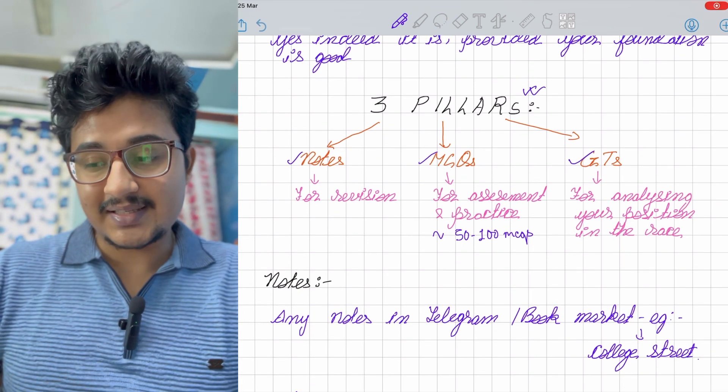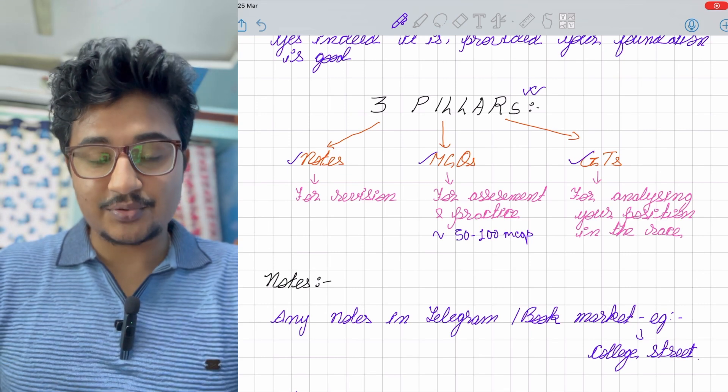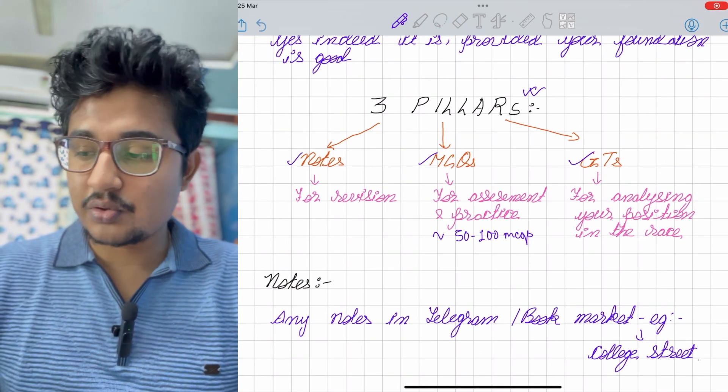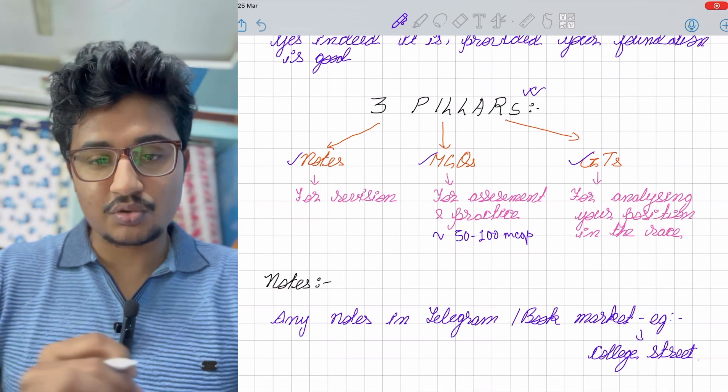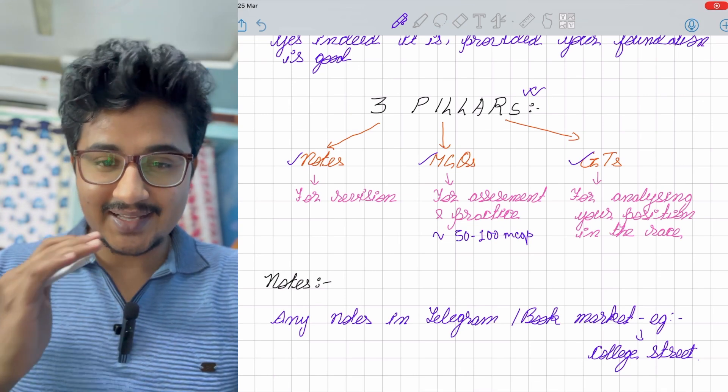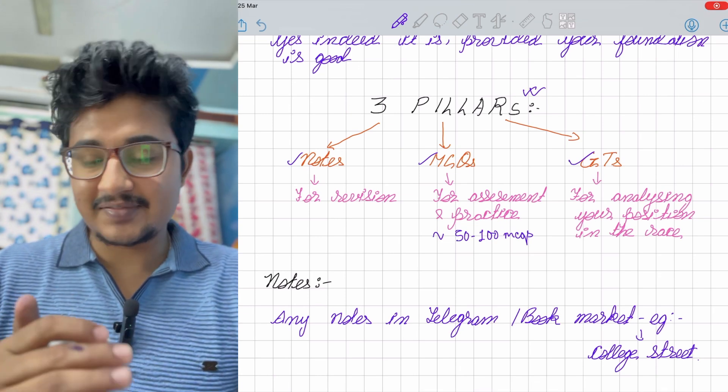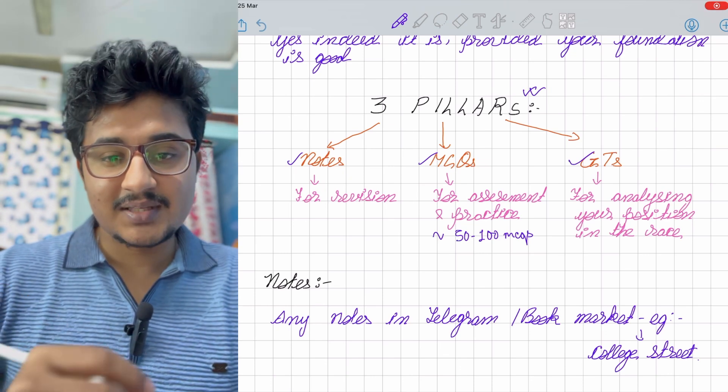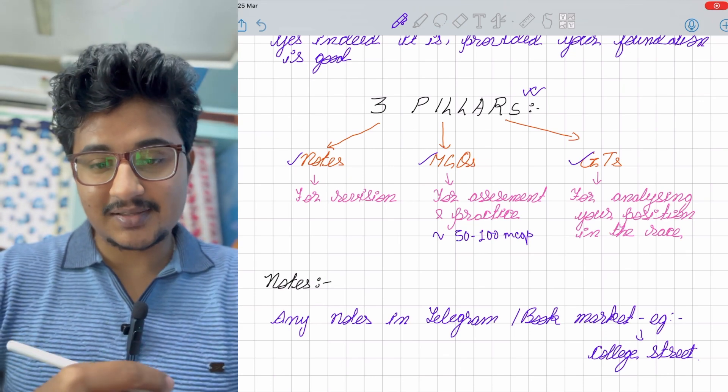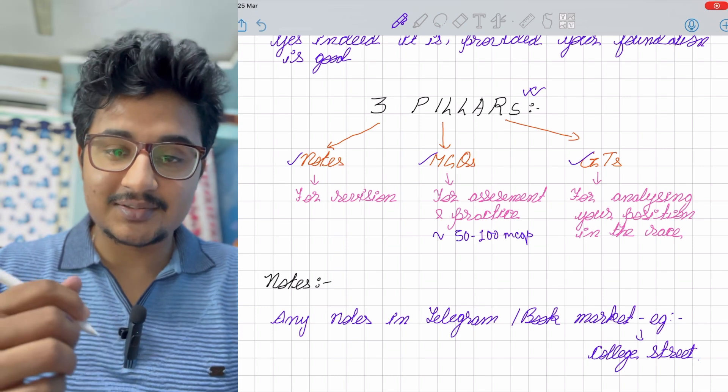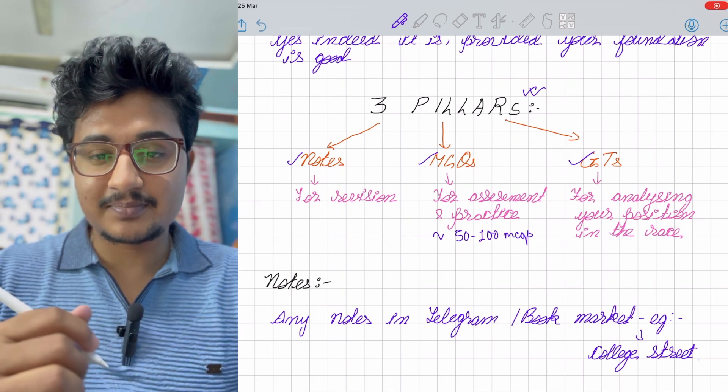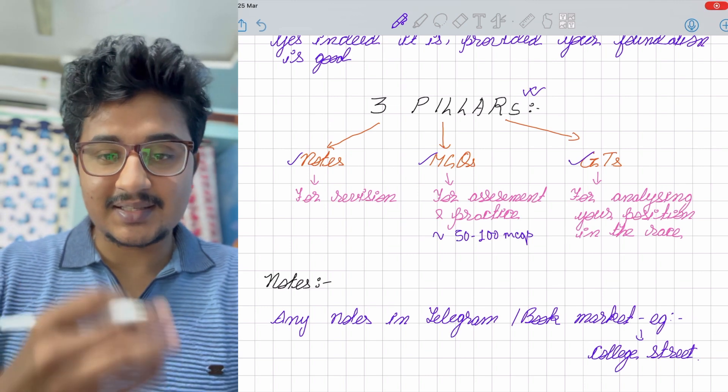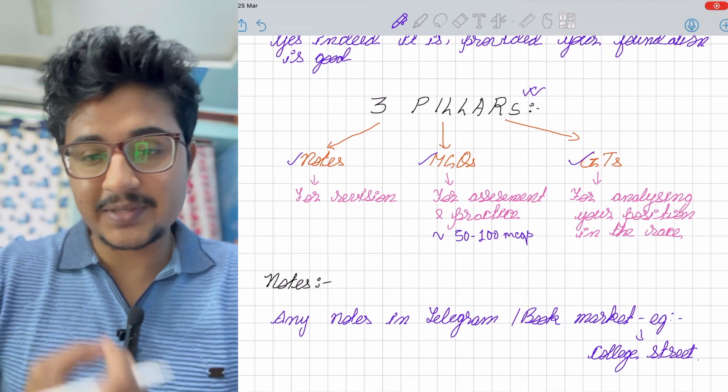Coming to the notes, they are available in telegram channels. Many telegram channels have any sort of notes. You can also go to a book market like in Kolkata there is College Street where you can get any sorts of notes, even the marked BTR or annotated BTR. Some channels and contacts provide annotated BTR.